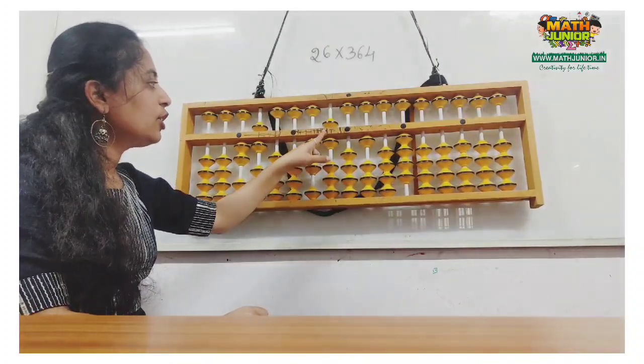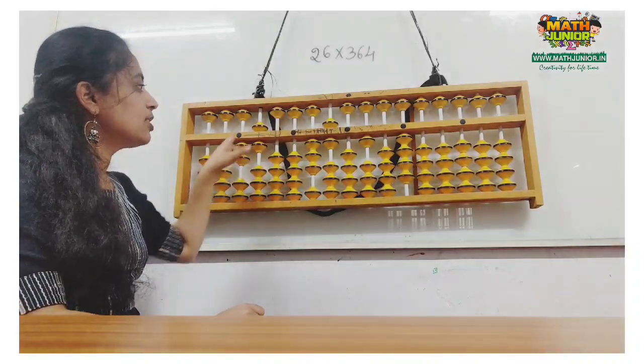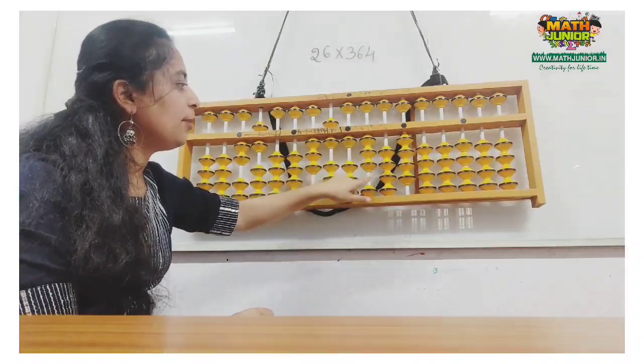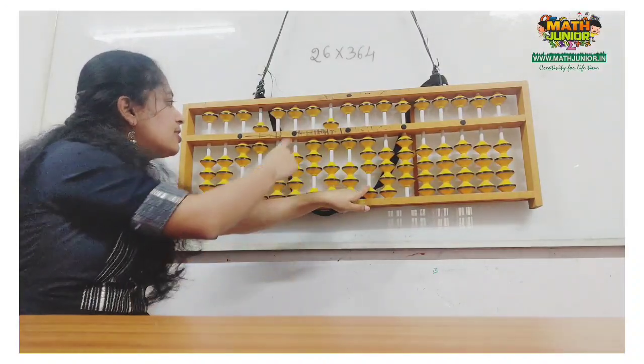Next, you have to multiply 6 with the 2. 6 twos are 12. Place 12 directly and put the finger here. Next, 6 times 6 are 36.